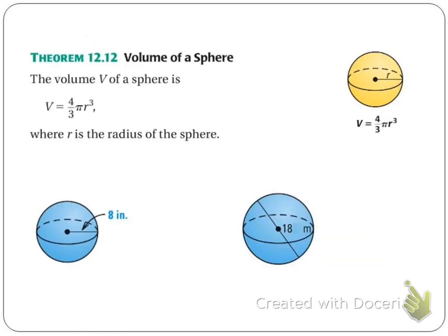Now let's look at volume. The formula for volume is a little different: 4/3 πr³. We still only need the radius, but it's cubed now. A helpful way to remember the difference: volume means units are cubed, and here the radius is cubed — whereas in surface area, it was radius squared and units squared. We also have that 3 in the denominator making it 4/3 πr³. Use that to keep the formulas separate.